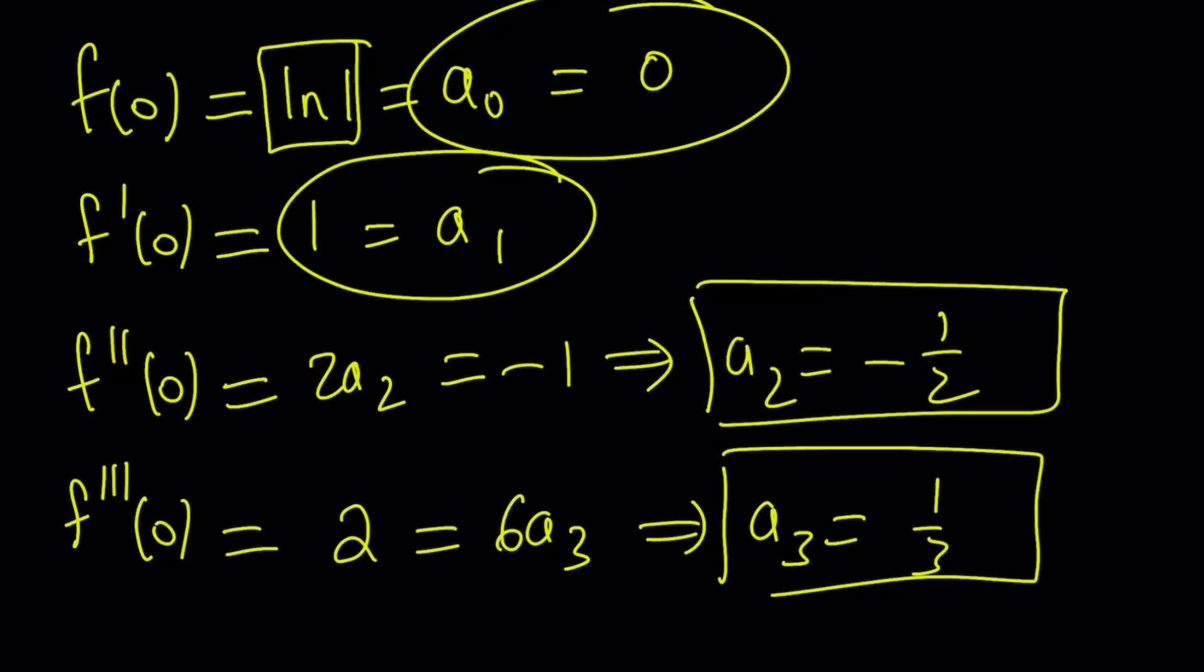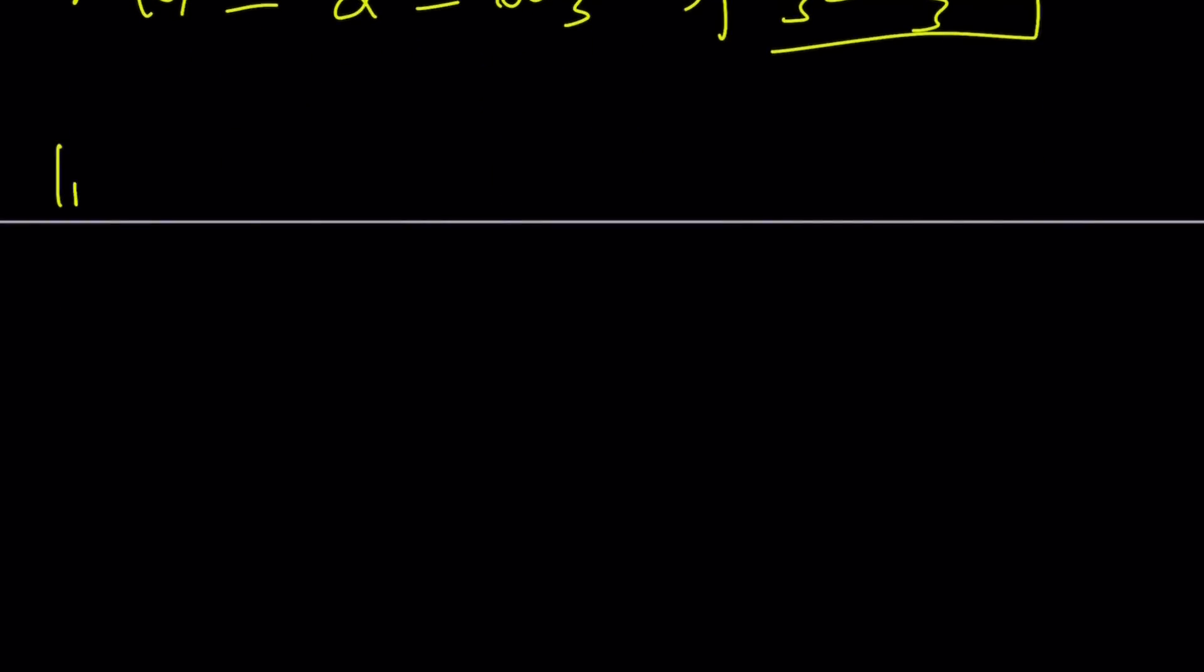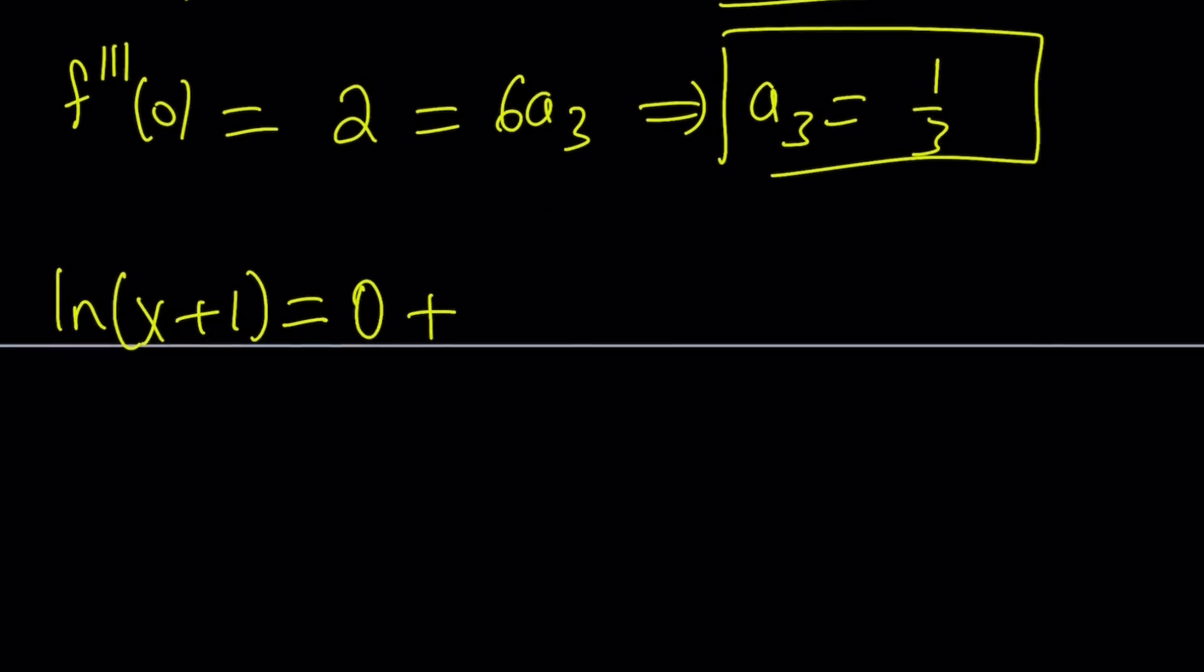So let's go ahead and take a look at these numbers. We have 0, forget about it. There's no constant. a₁ is going to be the coefficient of x is 1, and then we have the 1 half, and then we have the 1 third. So it's going to look like this. ln(x+1), which is also f(x), can be now written as a₀ is 0, and then a₁x. Remember, a₁ is 1, so it's just going to be x.